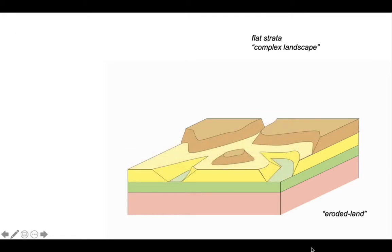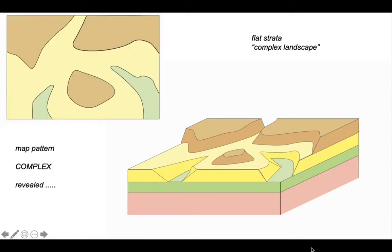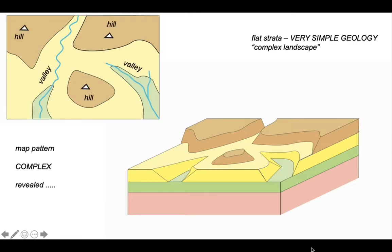We erode our layers with a landscape and think about the map pattern for this block diagram. It's quite a complicated pattern — certainly more complicated than those flat land patterns of just simple stripes. We can recognise the valleys with streams in them, and patches of high land because they're hills. Even though the geology is really simple — horizontally layered strata — the landscape is more complicated, it is incised. These patches of younger rocks that are detached in map view from their main outcrop areas are called outliers.